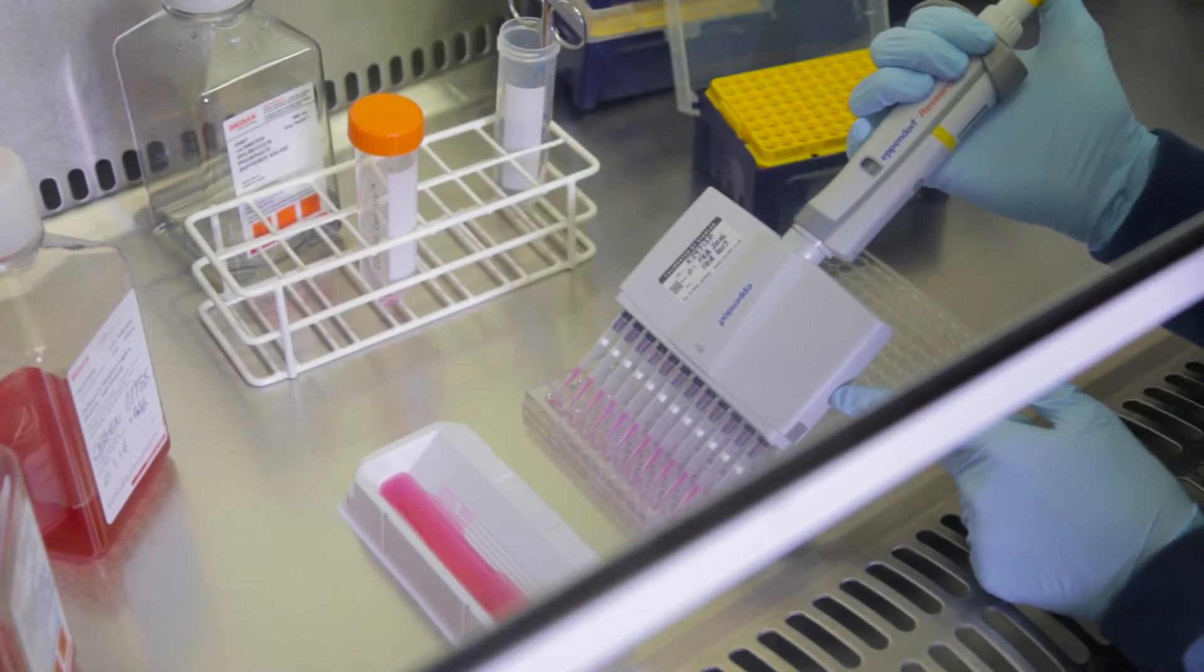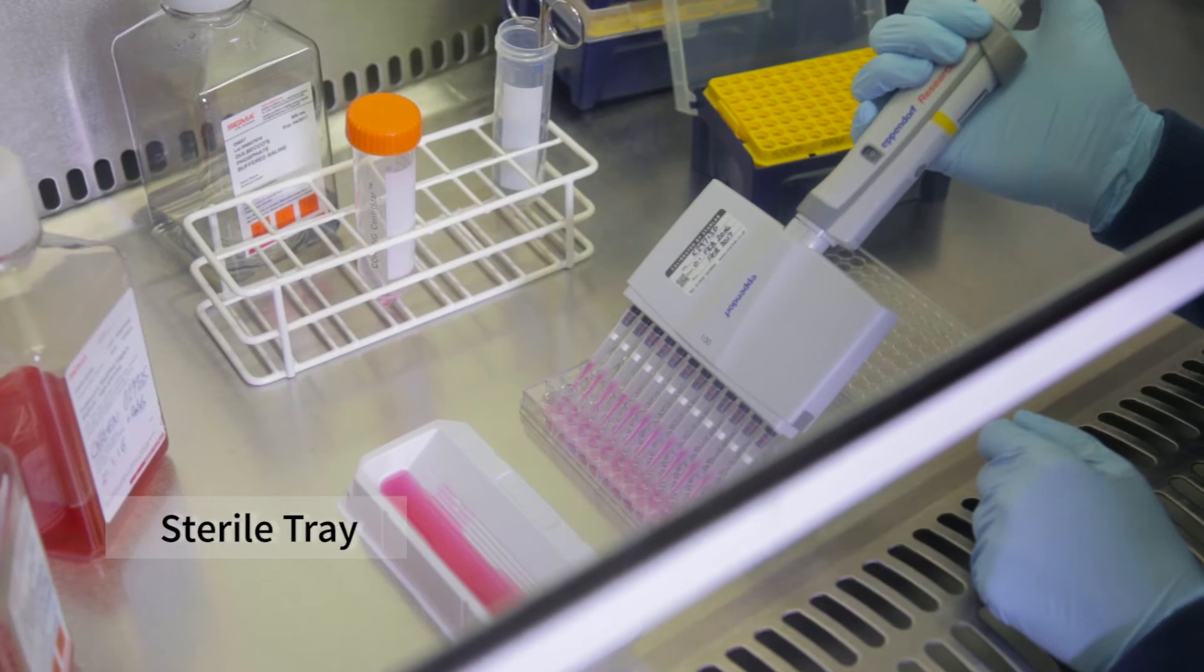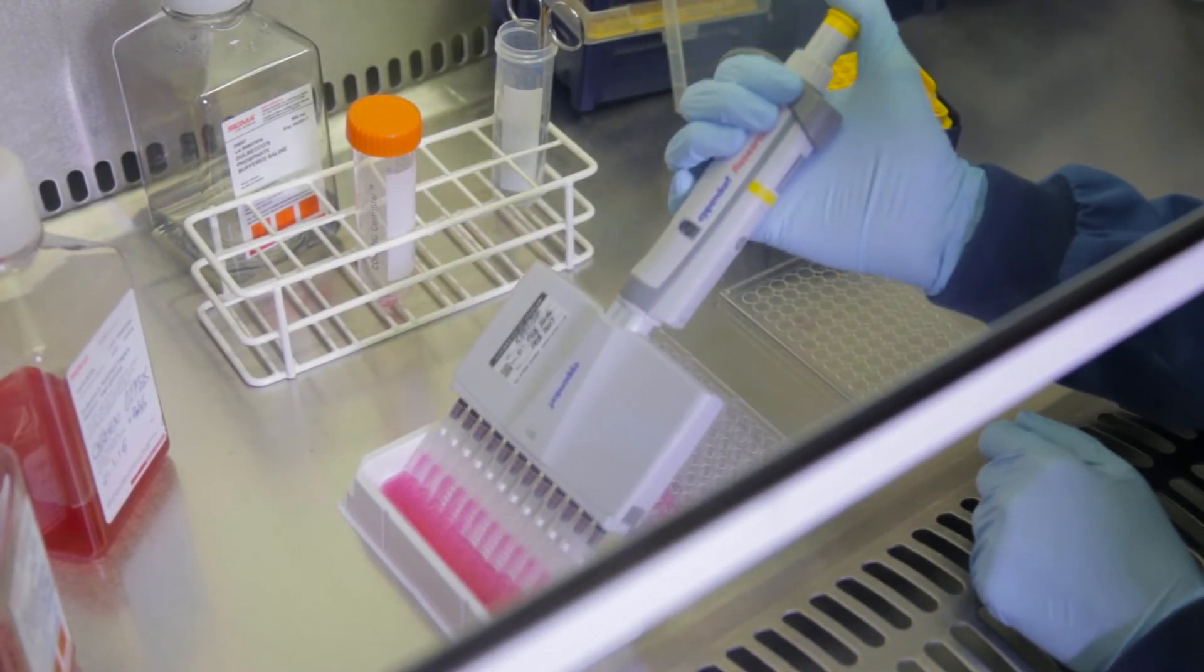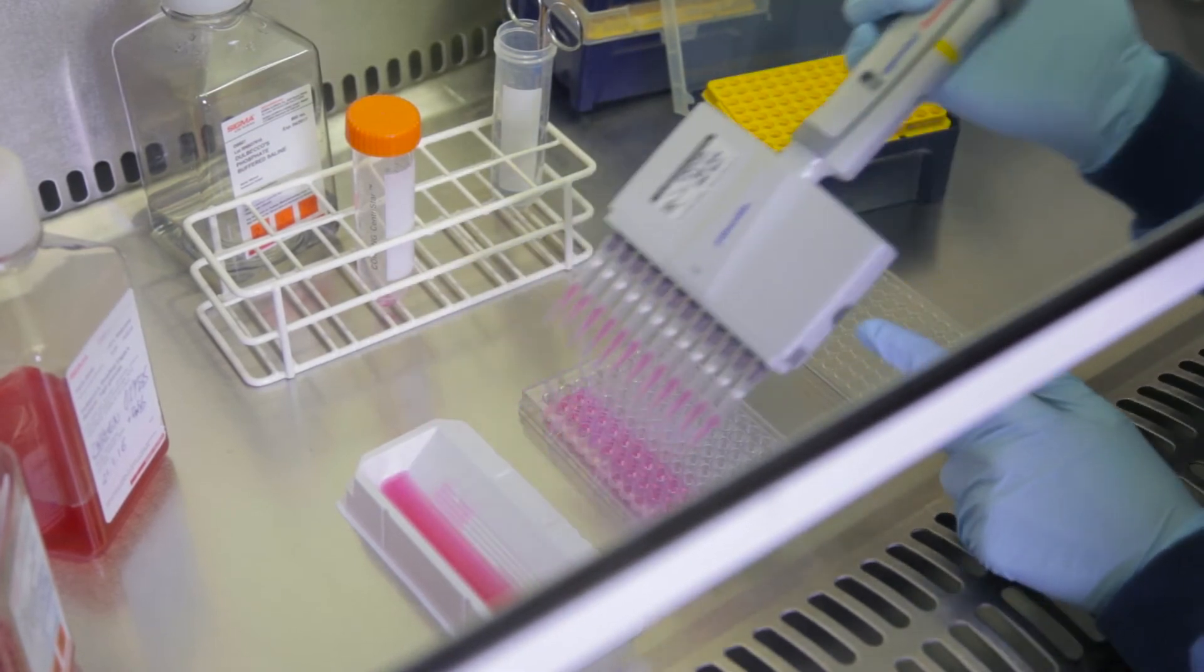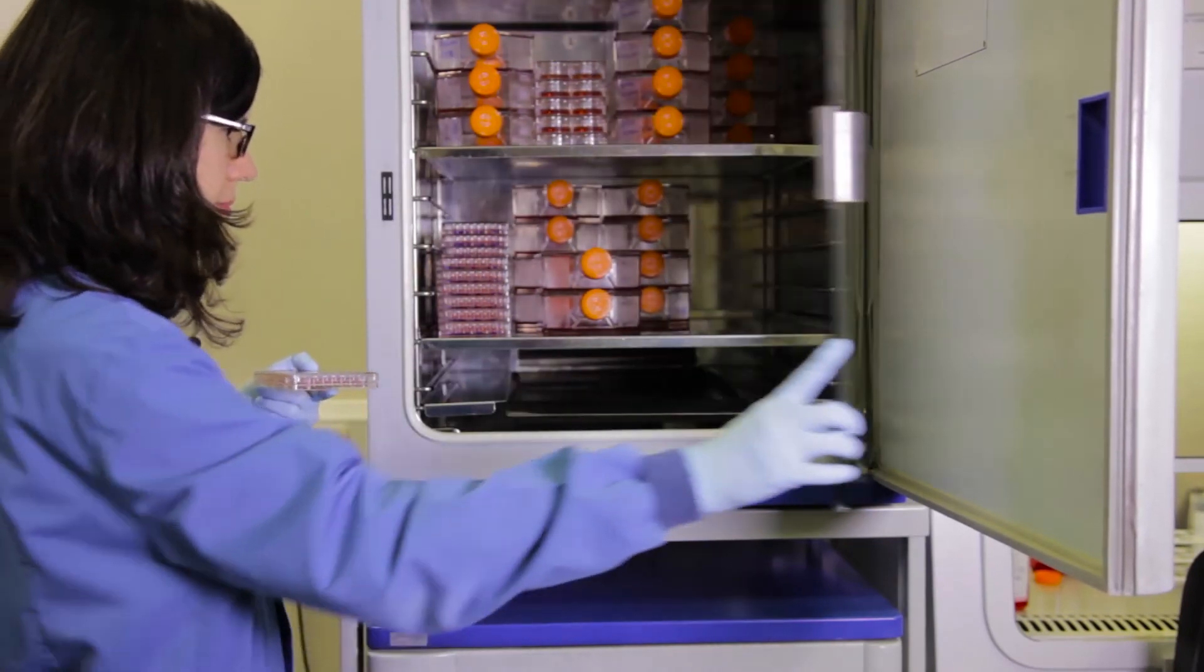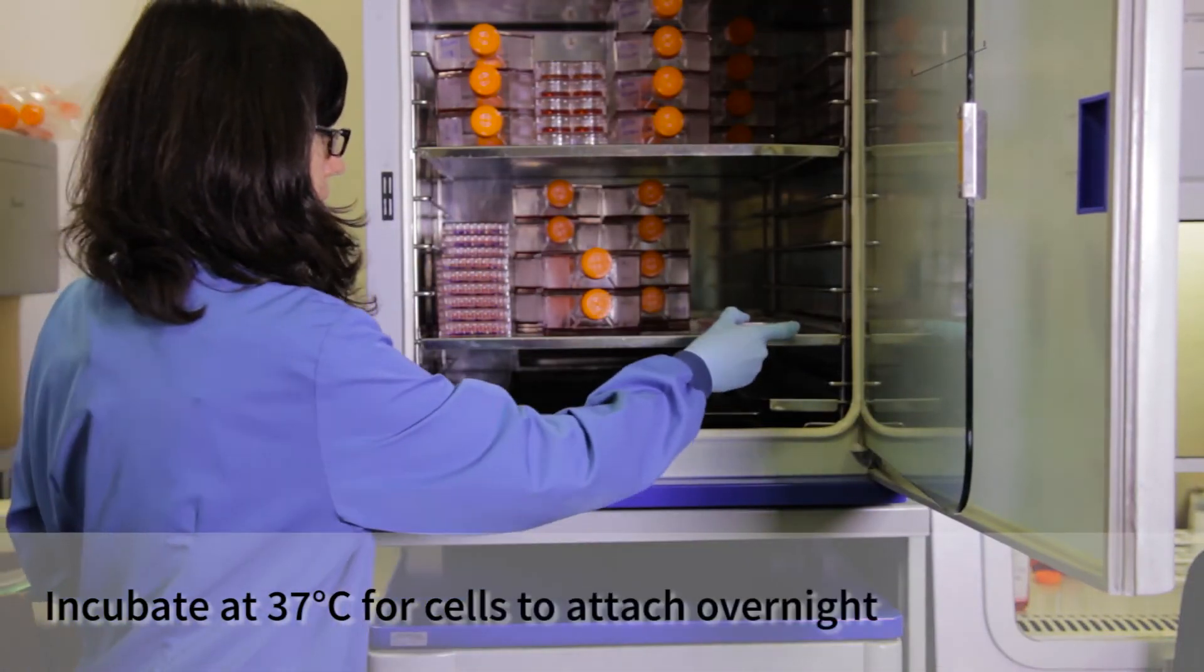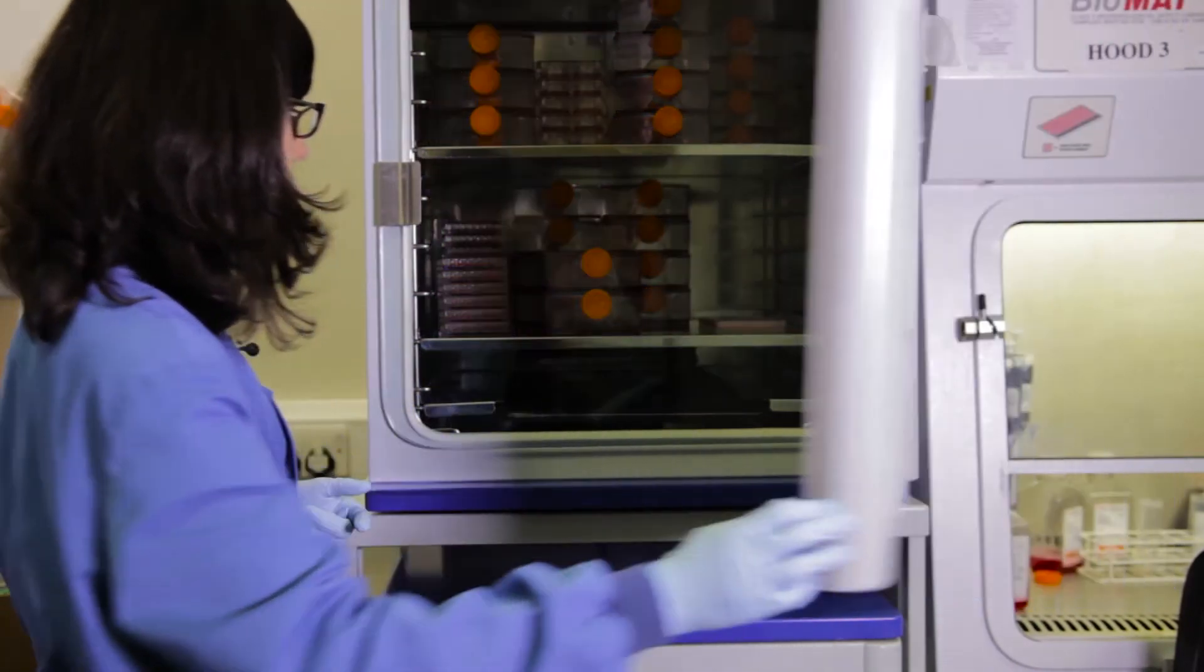Now, I am going to use a multi-channel pipette to add the same volume of cells to all wells, in this case 100 microliters. First, I have put the diluted cell solution in this sterile tray which makes it easier to pipette. Then, I attach the tips to the pipette and carefully pipette the cells into the plate, row by row. Now, I put the plates in the incubator at 37 degrees. The cells will attach overnight and can be treated in my experiment tomorrow.